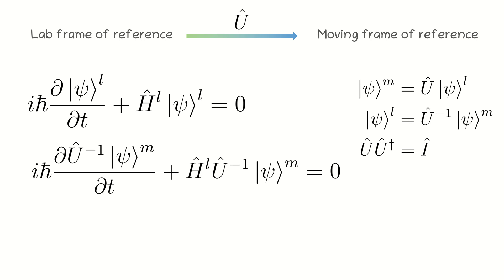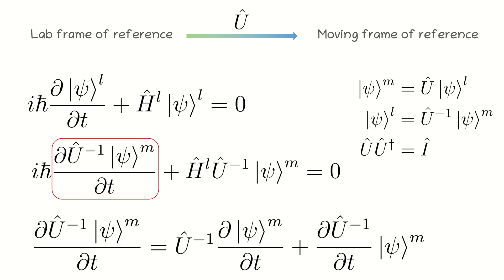Then, we need to get rid of this unpleasant partial derivative. To do this, write out the derivative according to the formula for the derivative of the product of the two functions.